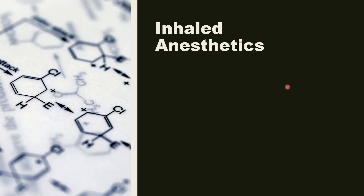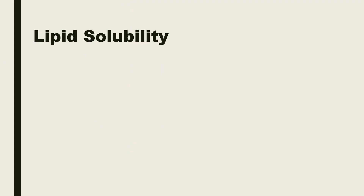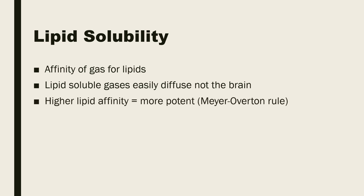The two key properties of an inhaled anesthetic that determine its clinical effects are blood solubility, which determines the onset and offset time, and lipid solubility, which determines potency. Lipid solubility is the affinity of a gaseous anesthetic for lipids. The more lipid-soluble a gas anesthetic is, the more easily it will diffuse into the brain, and therefore anesthetic gases with high lipid affinity are more potent. This is sometimes called the Meyer-Overton rule, named for the people who first described it.